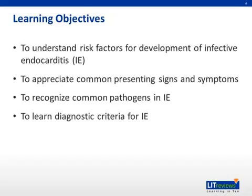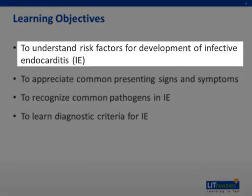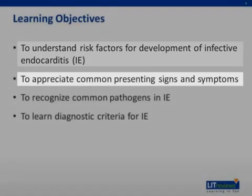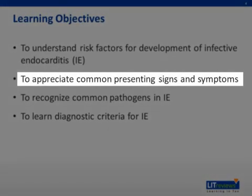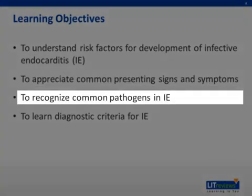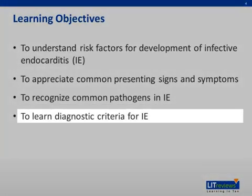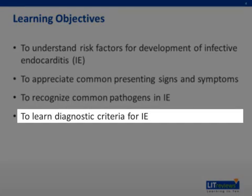This talk has a few different learning objectives. First, you will learn about risk factors for the development of infective endocarditis. Second, you will learn to appreciate common clinical presentations of patients who are affected with endocarditis. It will be important to recognize the different types of pathogens that most commonly cause infective endocarditis. And finally, we will review diagnostic criteria for IE, specifically the Duke criteria.